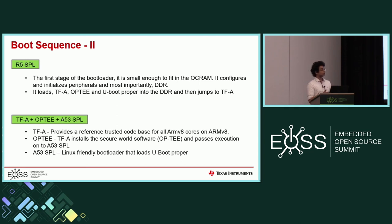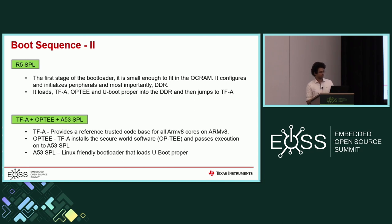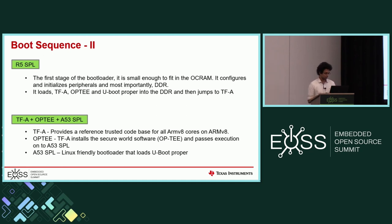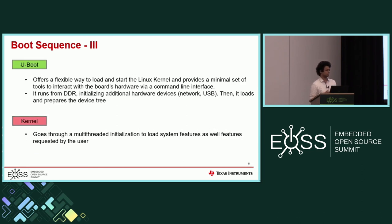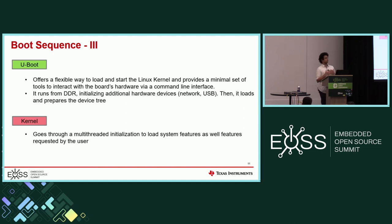Once R5 SPL is done, you jump to TFA, or Trusted Firmware ARM. From there, we jump to OPTEE, which is the non-secure Linux compartment to the TFA. From OPTEE, we load into A53 SPL, where we have more functionality and it's running off the A53 — your core is finally running at best. From there, we jump to U-boot proper, where you have a wide variety of functionality available to boot into multiple medias.